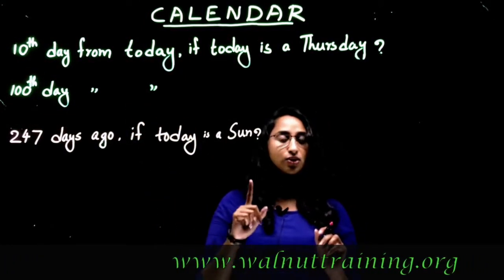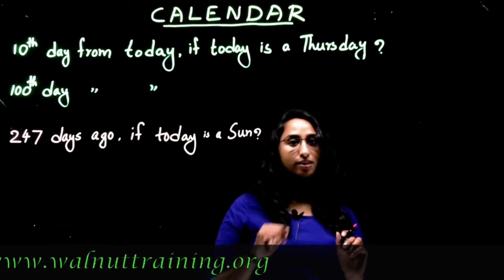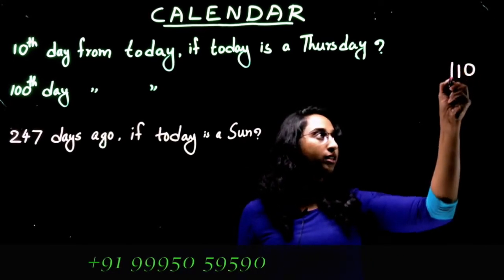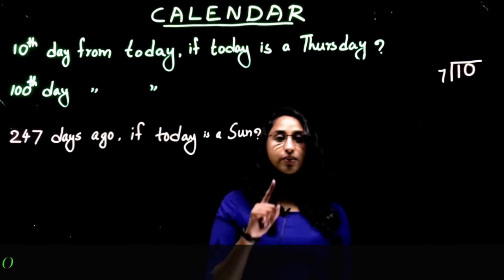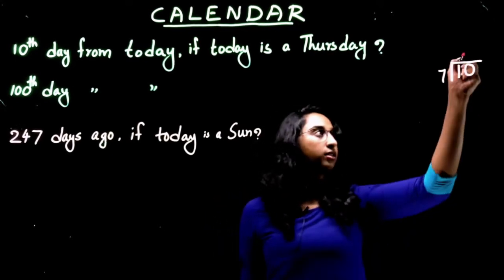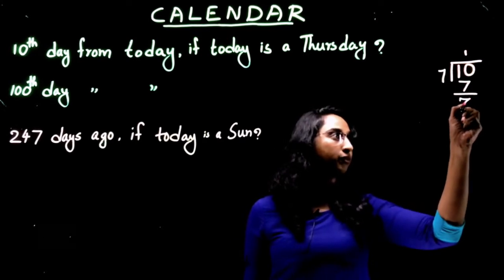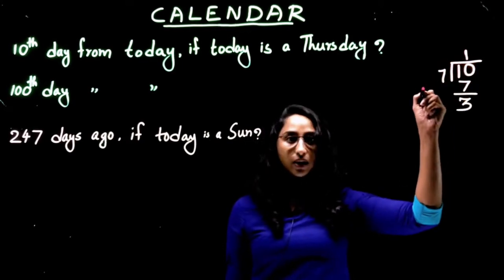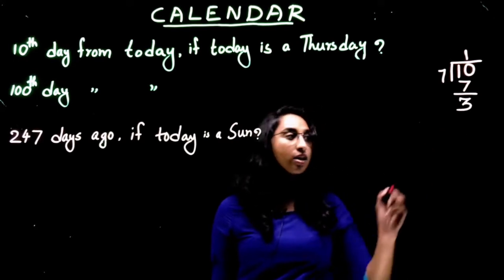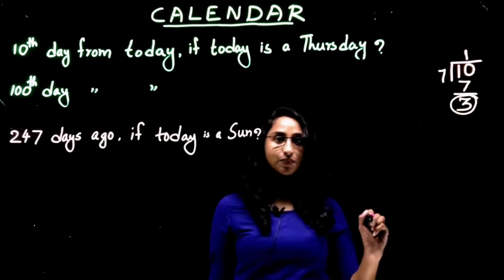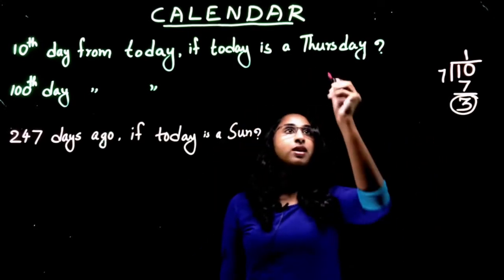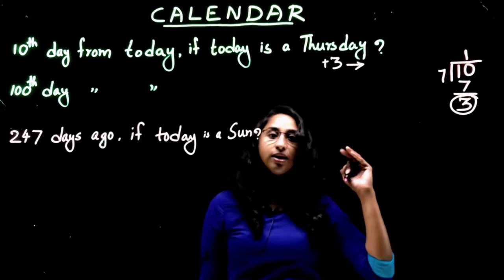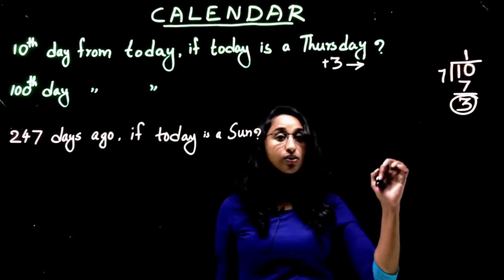But what will we do if the number is a bigger one? In such cases, we have to be aware of the standard method. Divide this ten with seven. Seven represents one week. One, seven, three. So in ten days there is one complete week plus three days. This three is what we call odd days. Add this three with Thursday. Thursday plus three: Friday, Saturday, Sunday. So the answer is Sunday.